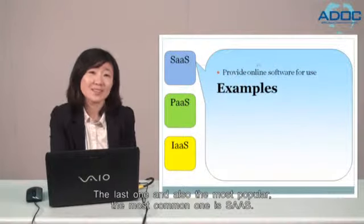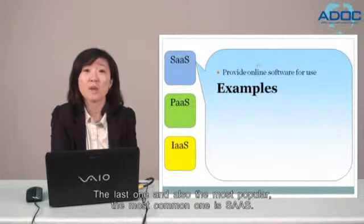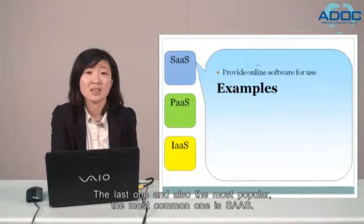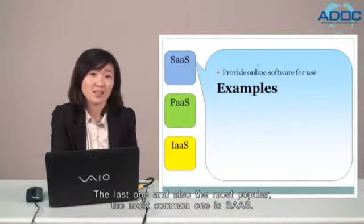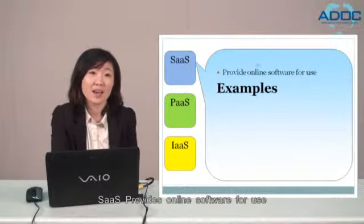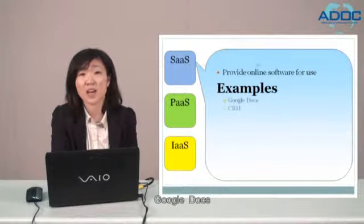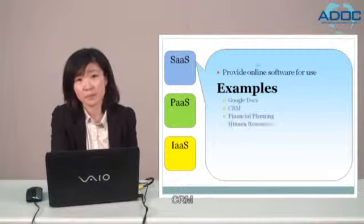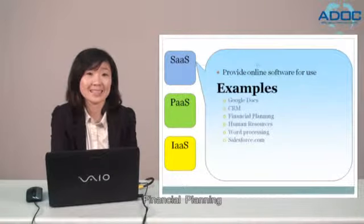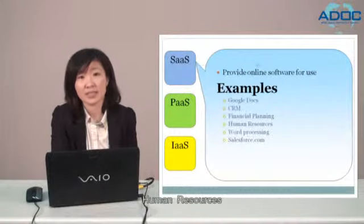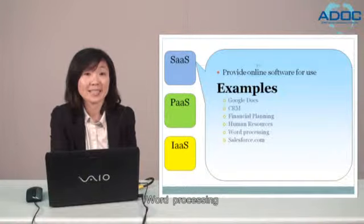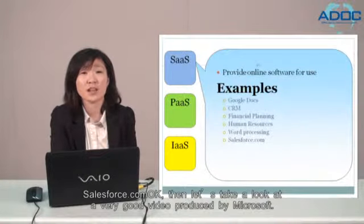The next one, and also the most popular and most common one, is SaaS. SaaS provides online software for use. Examples are Google Docs, CRM, Financial Planning, Human Resources, Word Processing, and Salesforce.com.